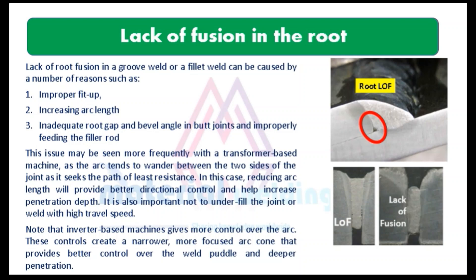Number 6 is lack of fusion in the root of the weld. Lack of root fusion in a groove weld or a fillet weld can be caused by: 1. improper fit up, 2. increasing arc length, 3. inadequate root gap and bevel angle in butt joints, and improperly feeding the filler rod. This issue may be seen more frequently with a transformer-based machine, as the arc tends to wander between the two sides of the joint as it seeks the path of least resistance. In this case, reducing arc length will provide better directional control and help increase penetration depth. It is also important not to underfill the joint or weld with high travel speed. Inverter-based machines give more control over the arc, creating a narrower, more focused arc cone that provides better control over the weld puddle and deeper penetration.